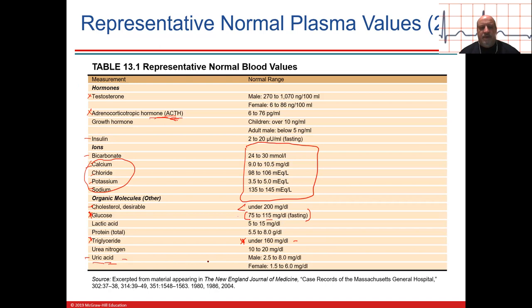If you have excess uric acid in your blood, that can lead to a condition called gout. Urea is a breakdown product of your proteins, and you don't want high nitrogen. Uric acid contains nitrogen too, because proteins have nitrogen. That could lead to taxing of the kidney and a very positive nitrogen balance.